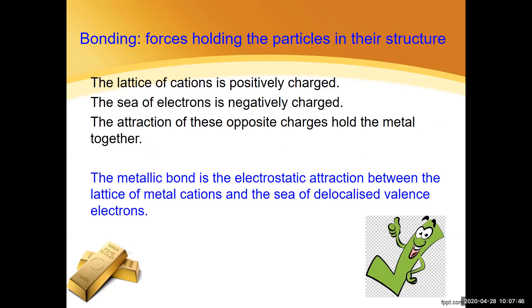What about bonding? Remember bonding is the forces that hold the particles in their structure. Why should the metal cations form a lattice? They're all positively charged. Surely you would expect them to just sort of fly apart with forces of repulsion. But they don't because the electrons are filling all that space in between. And those negatively charged electrons are actually kind of shielding the positives from each other. The lattice of cations is positively charged and the sea of electrons is negatively charged, and that means that the opposite charges are going to attract. And that's what holds this entire structure together. And that is called the metallic bond. The metallic bond is the electrostatic attraction between the lattice of metal cations and the sea of delocalized valence electrons. That's the statement that we need to see if you're asked to describe the metallic bond.